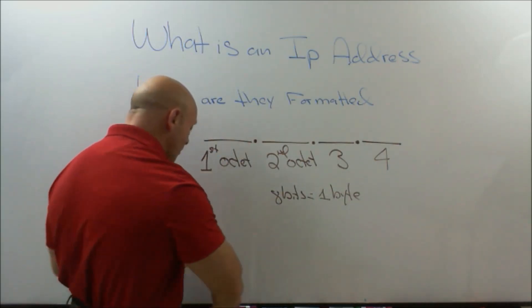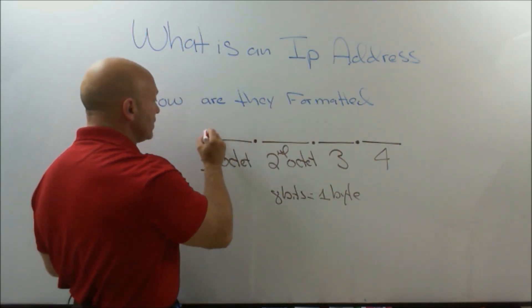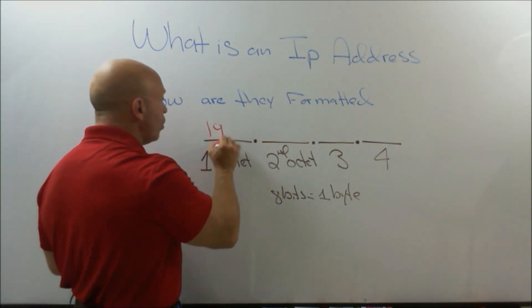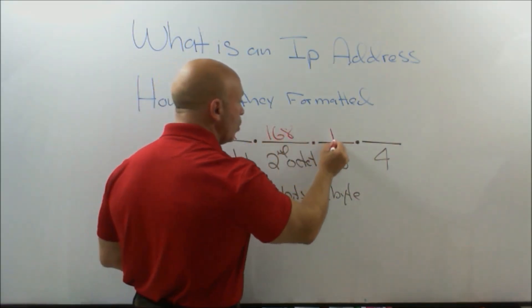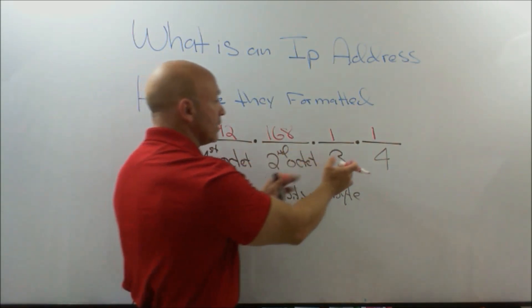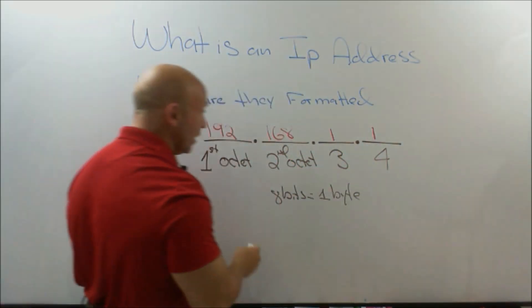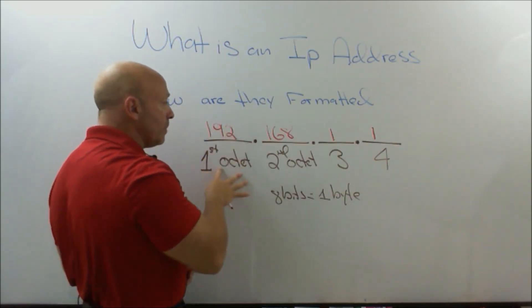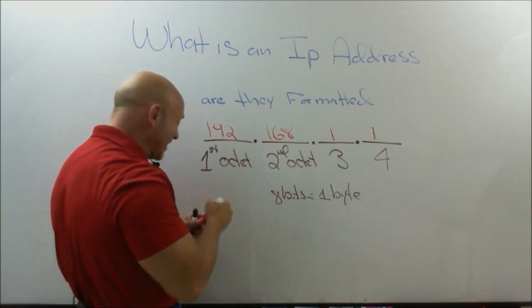Let's take for example an IP address that we're very familiar with 192.168.1.1, right? This would be the first octet, second octet, third octet, fourth octet. But if you were to turn this into binary, and we'll use the first octet as an example.